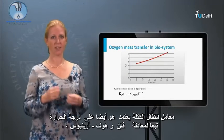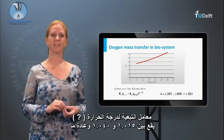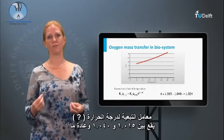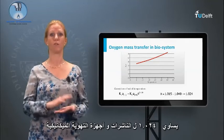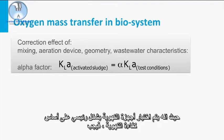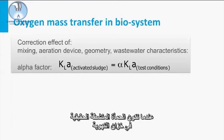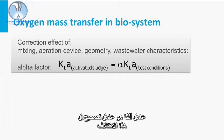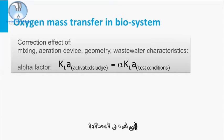The mass transfer coefficient is also temperature dependent, following the van den Hof-Arrhenius equation. The temperature dependency coefficient lies between 1.015 and 1.040 and is typically 1.024 for diffusers and mechanical aerators. Since aerators are mainly chosen based on aeration efficiency, the alpha and beta factors have to be considered too. Since the mass transfer coefficient is often measured in clean tap water, it can change when real activated sludge is in the aeration tank. The alpha factor is a correction factor for this difference. Alpha factors for diffused aerators and mechanical mixers are respectively in the range of 0.4 to 0.8 and 0.6 to 1.2.